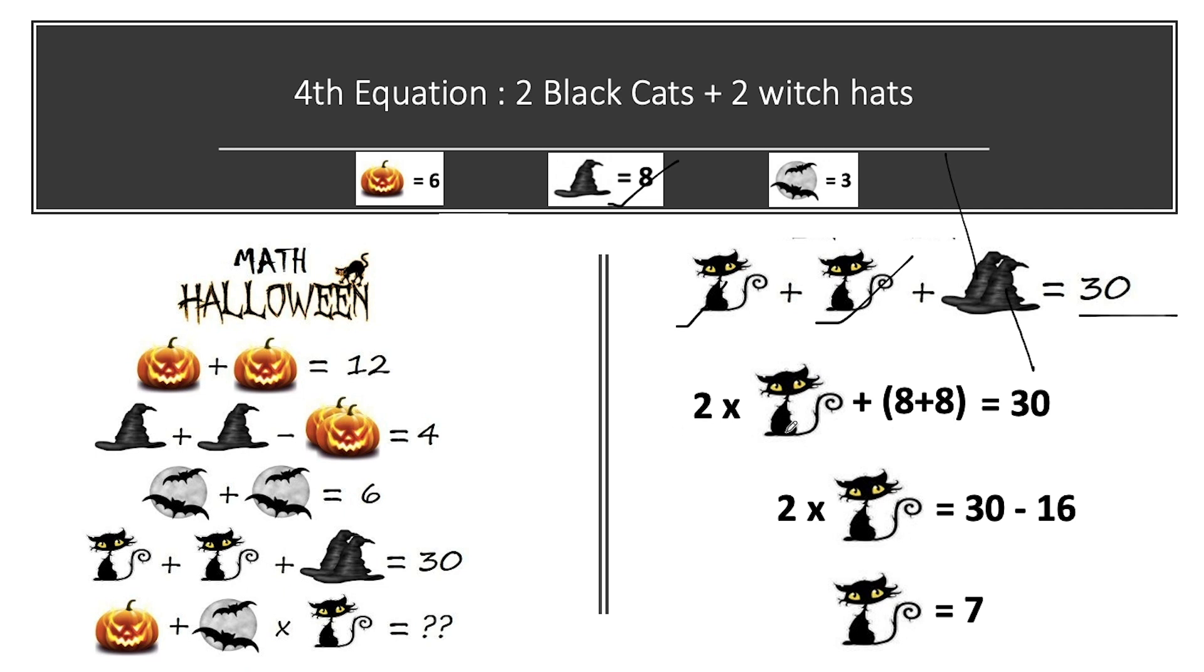So it will be 2 into 1 cat plus 8 plus 8 is equal to 30. We have written 8 plus 8 because there are 2 hats. So 2 into cat is equal to 30 minus 16 that is equal to 7. So from the fourth equation we have 1 black cat value that is equal to 7.